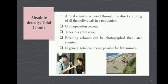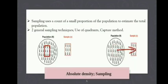A total count is achieved through the direct counting of all individuals in a population — much like the U.S. census. We could count trees in a forest or photograph a harbor seal breeding colony and count the population later. However, total counts are only possible for very few animals since animals are always moving and double-counting is easy. Another way to determine absolute density is through sampling, where the count of a small proportion of the population is used to estimate the total. For example, instead of counting all ants, we count a few and extrapolate to the total.